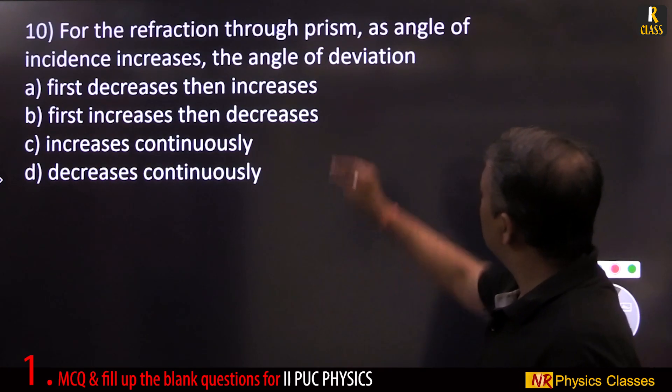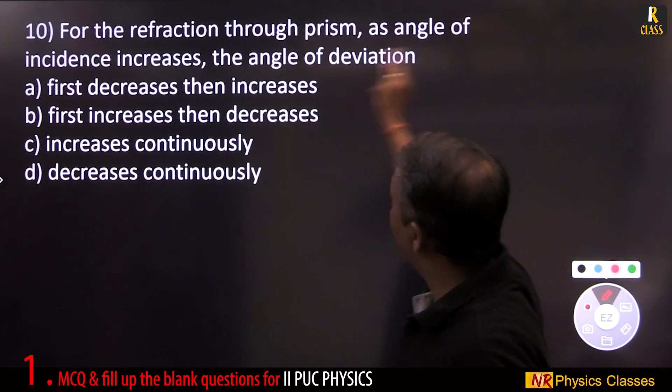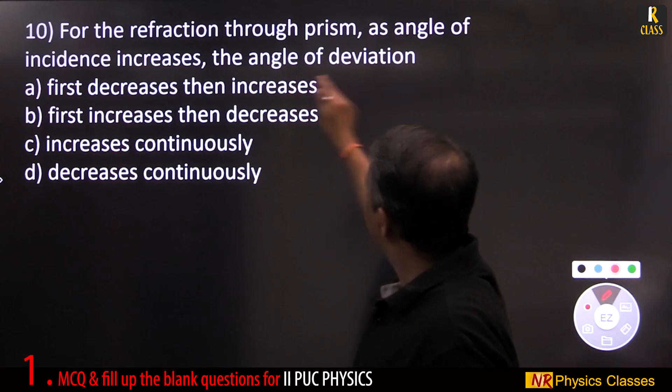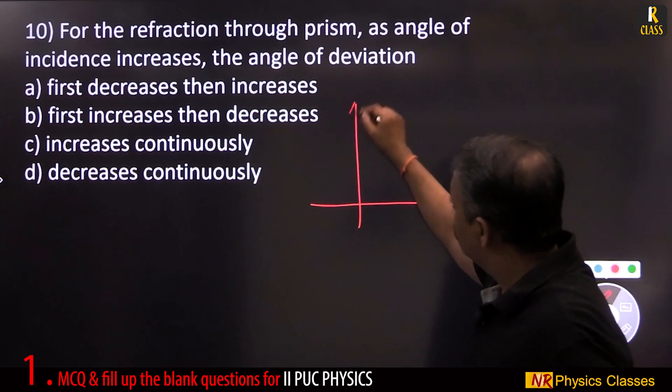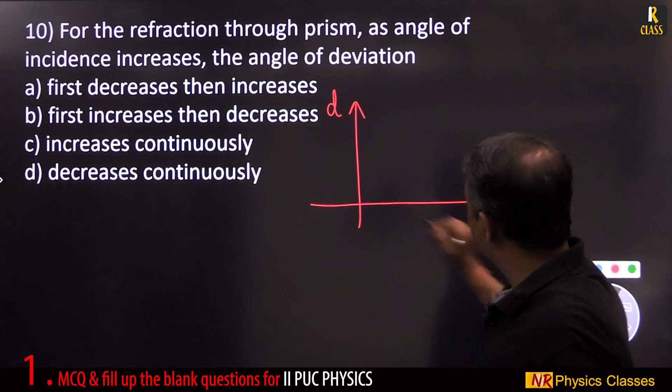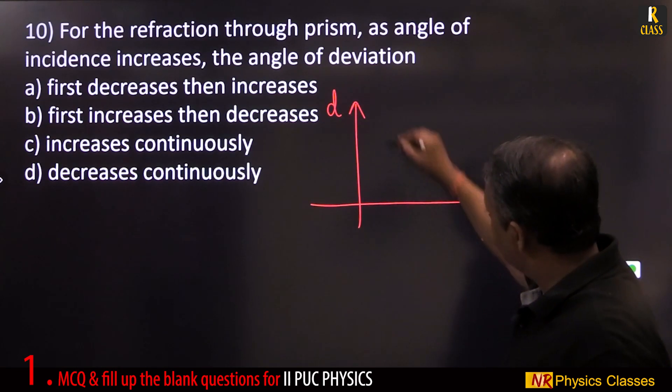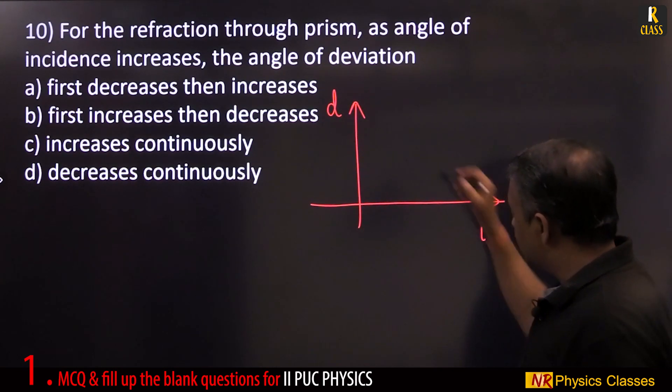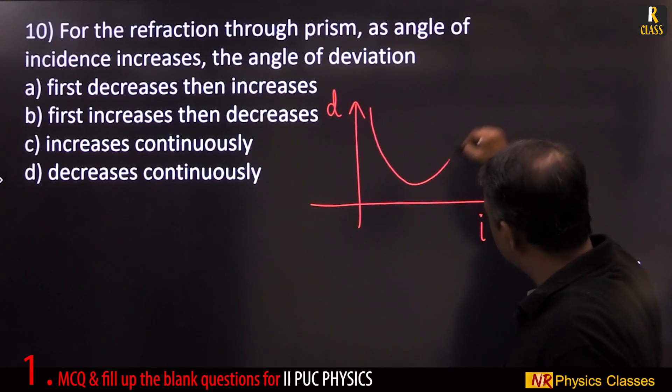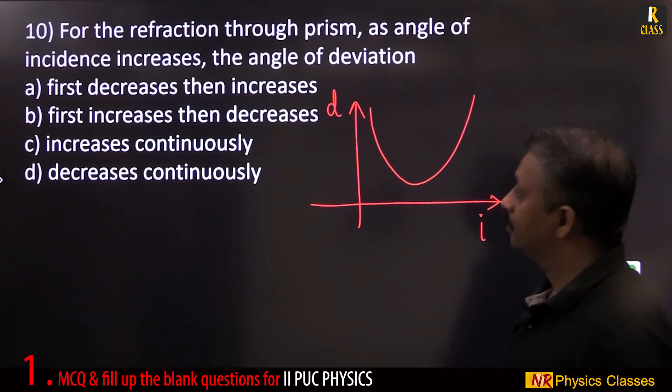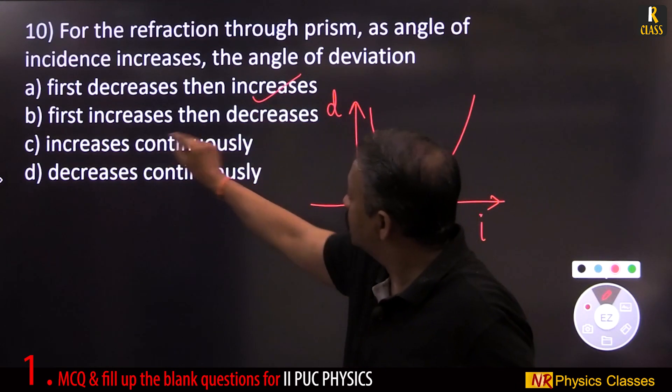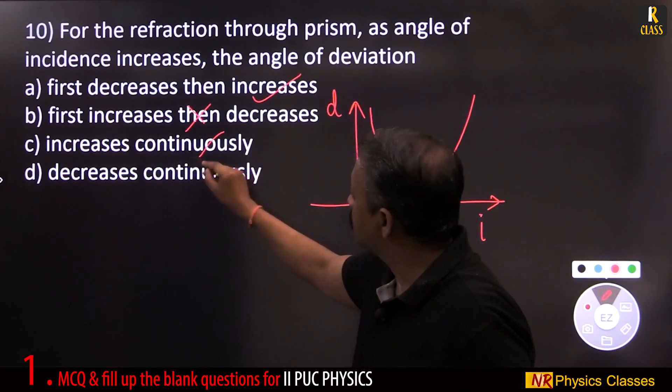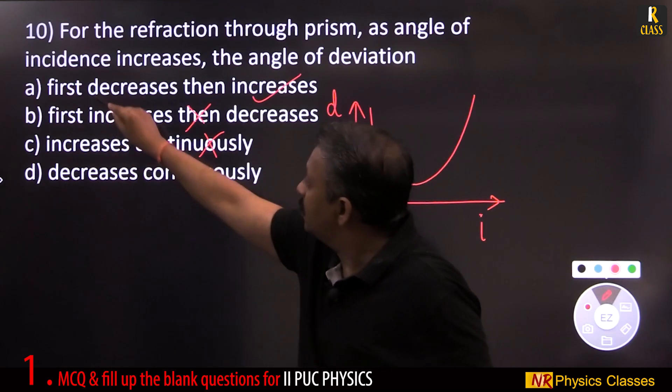For the refraction through the prism, as the angle of incidence increases, the angle of deviation. In the derivation, we have the step: deviation versus angle of incidence. As the angle of incidence increases, deviation decreases and then increases. First decreases and then increases.